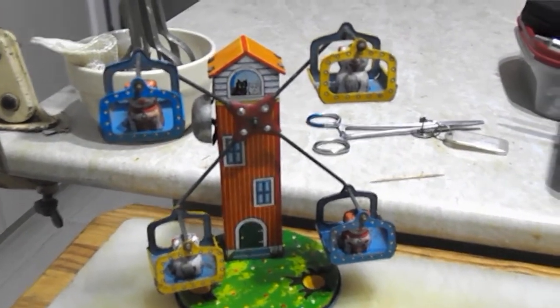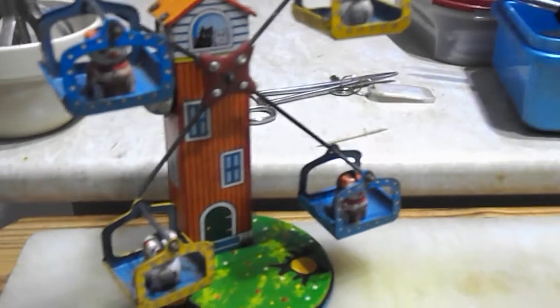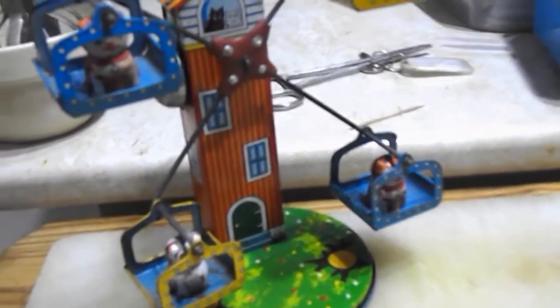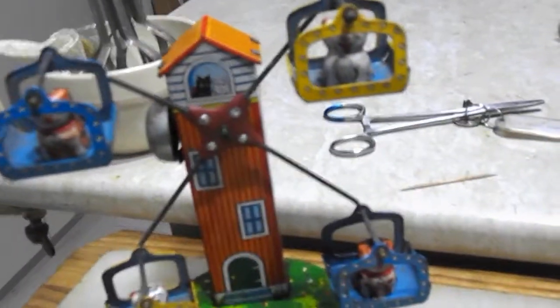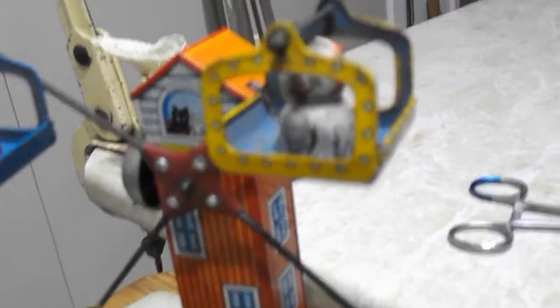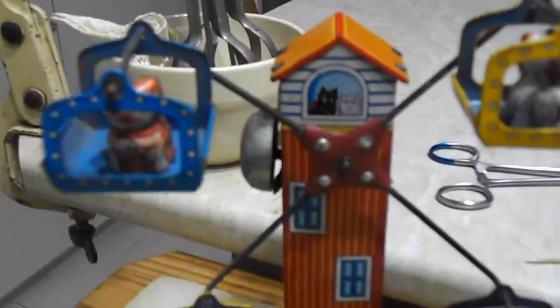G'day guys, this is Wayne and Judy from Down Under. This is a little clockwork merry-go-round that we picked up. I'd say there are possibly cats in there. You can see there's a little Scotty and the cat watching.